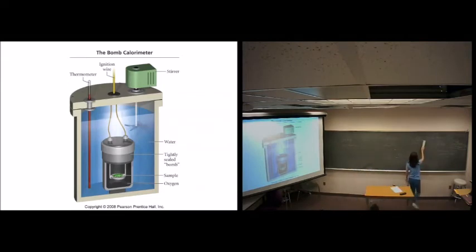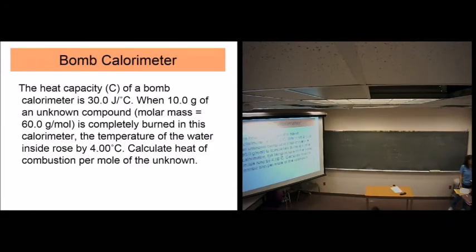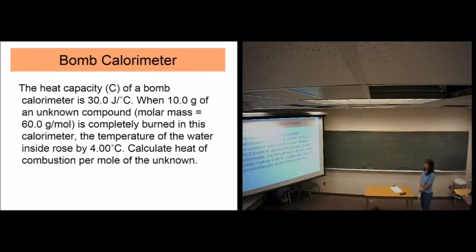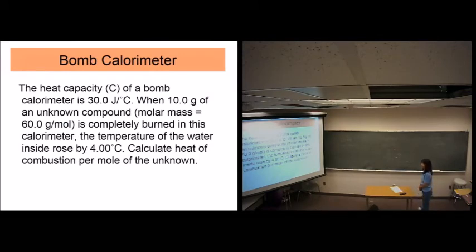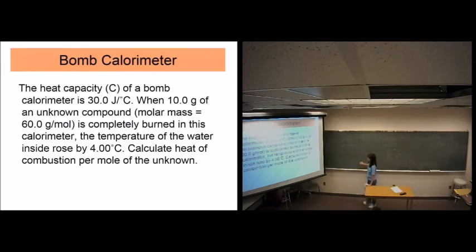Let's do the bomb calorimetry problem. The heat capacity of the bomb calorimeter is given. 10 grams of an unknown compound with a given molar mass is completely burned. The temperature of the water inside rose by 4 degrees. Heat capacity is 30 joules per Celsius. Step one is done — we have heat capacity and delta T. See if you can do steps two and three. The ending units are kilojoules per mole of unknown.